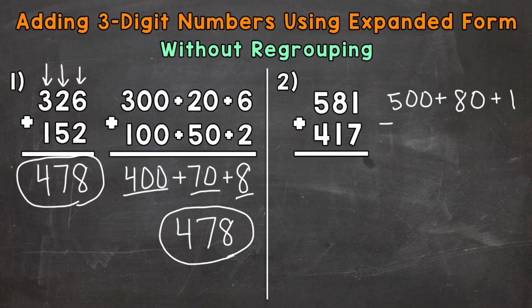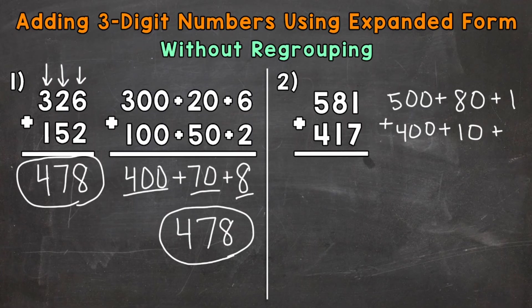Let's do 417. A four in the hundreds place has a value of 400. Plus a one in the tens place, so that value is going to be 10 — one group of 10. Plus seven in the ones; that represents seven ones, a value of seven. Now we can add all of our places together. One plus seven in the ones place gives us eight ones.